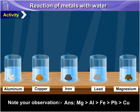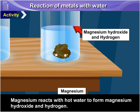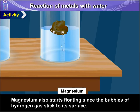The reactivity decreases in the order: magnesium is more reactive than aluminium, which is more reactive than iron, which is more reactive than lead, which is more reactive than copper. Magnesium reacts with hot water to form magnesium hydroxide and hydrogen. Magnesium also starts floating since the bubbles of hydrogen gas stick to its surface.